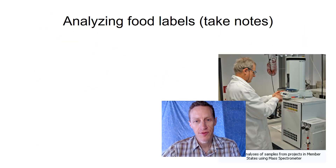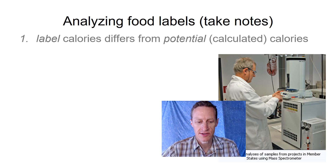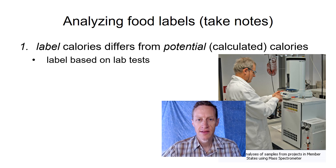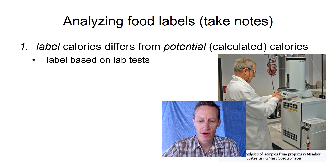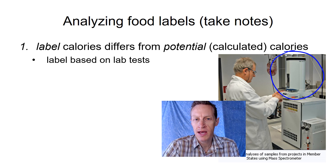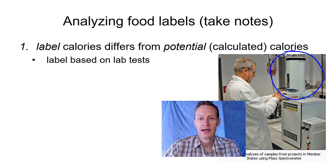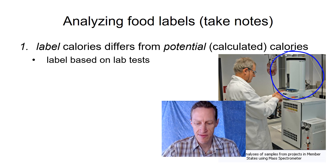Okay, so hopefully you had a chance to think about that. The reason that the label calories differ from the potential calories is that the label calories are based on lab tests. You may recall that when they test these foods, they use what's called a bomb calorimeter, and they literally burn the food. The heat that comes out of burning that gives researchers an idea of how much energy is in that food.